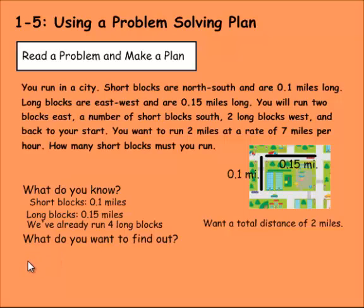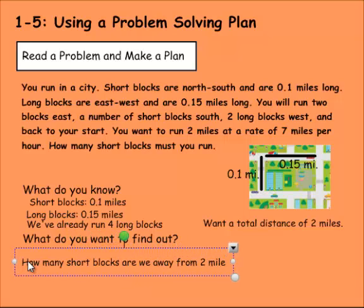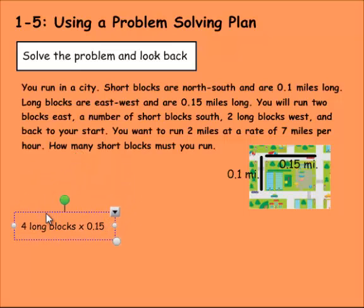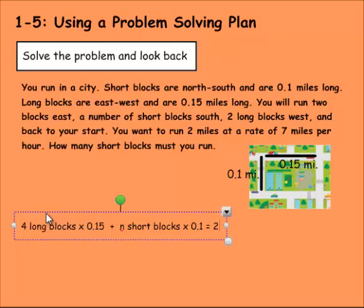So what we need to find out is how many short blocks are we away from two miles, because we've already run four long blocks at 0.15 miles. So if we're going to solve this then, we need to say four long blocks times 0.15 plus how many short blocks. So next we'll do n short blocks times 0.1, and then that needs to equal two because we need to get to two miles here.